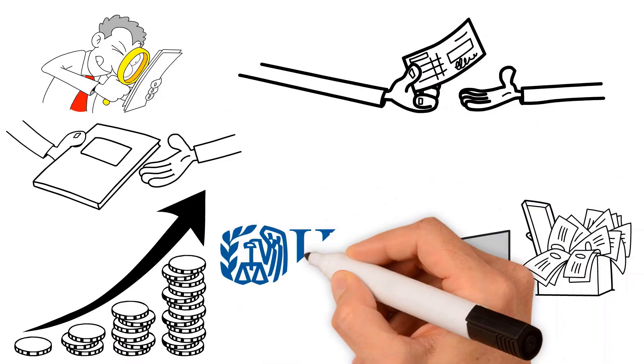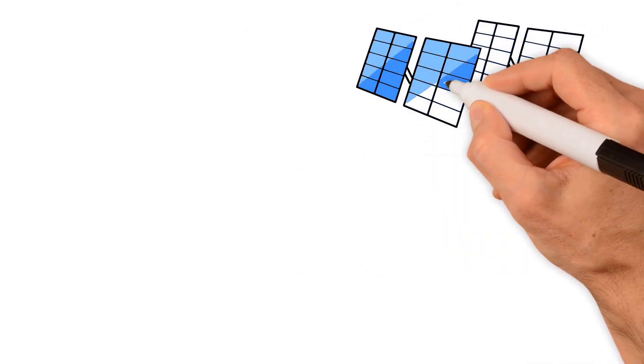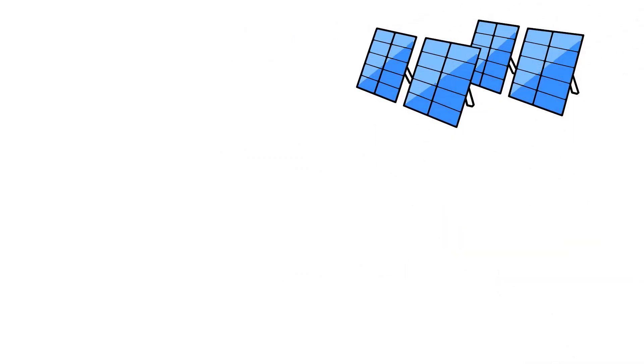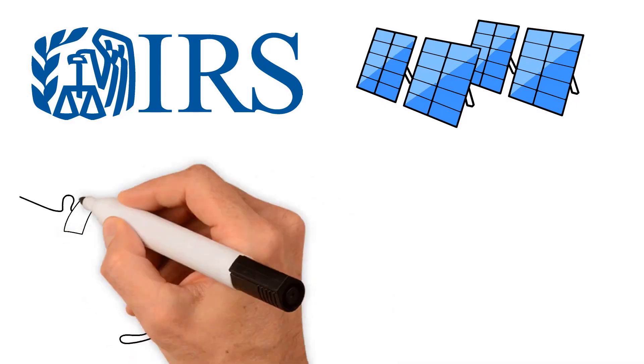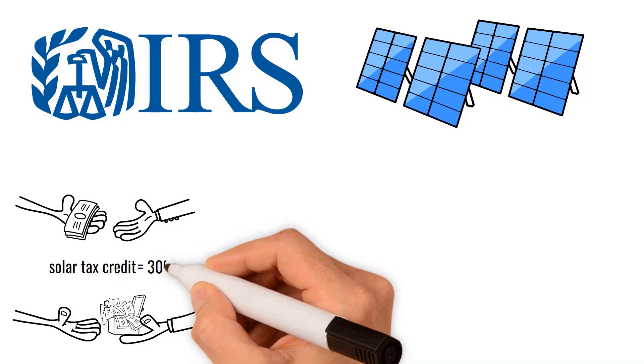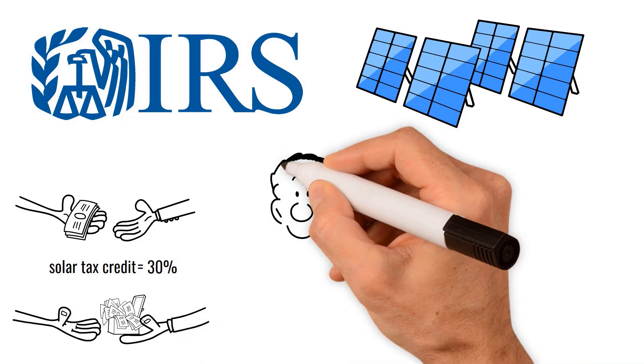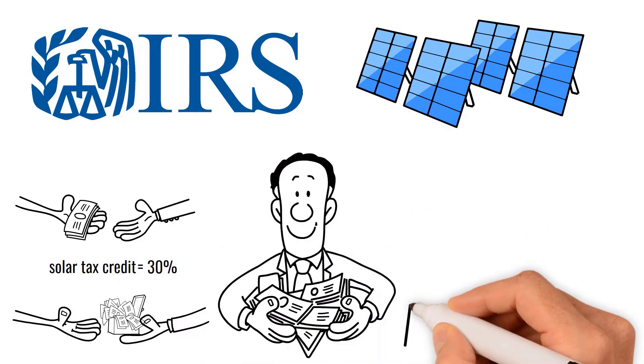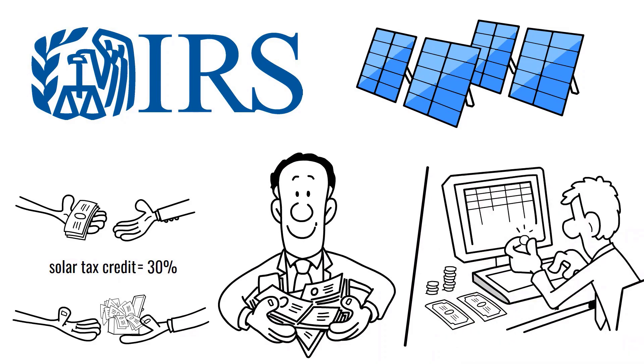This year Bob decided to go solar, which means he now has a second bucket to pay the IRS with. This bucket is called the solar tax credit and it's equal to 30% of the price of his solar system, regardless of whether he paid cash or financed his system.